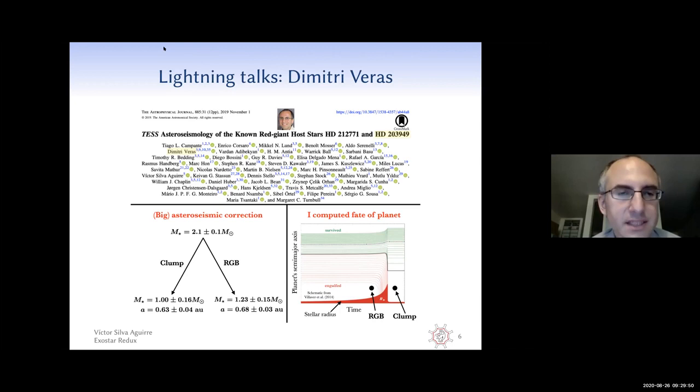Many members of the ExoStar program are co-authors on this paper, but my role was to compute the fate of the planets in these systems. The results are quite interesting because if the star is an RGB star, then the current parameters can be explained easily. However, if the star is in the clump, then it's actually quite difficult to explain the current planetary parameters. So in this way, computing the planetary fate is a way to help constrain the stellar evolution. Thank you.